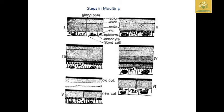In the picture provided, the first step shows the gland pores open, followed by the pores closing. In the third step there is an increase in enzyme activity which disintegrates the old cuticle. A line forms between the old and new cuticle layers, and the sixth picture shows the old cuticle rupturing.